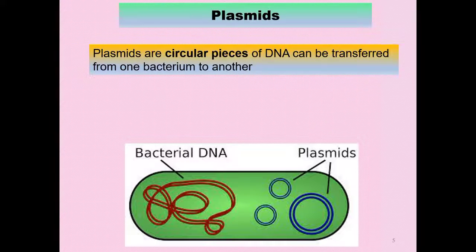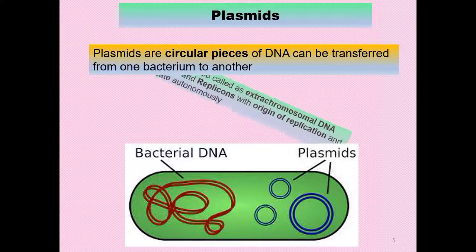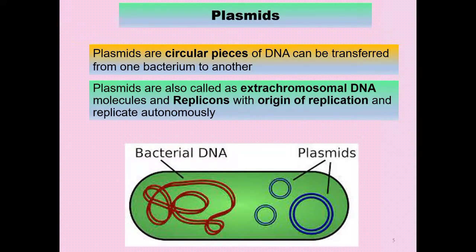Plasmids — what are the plasmids? As discussed earlier, plasmids are responsible for antibiotic resistance. These are circular pieces of DNA and can be transferred from one bacterium to another through conjugation and other recombinant methods. They are also called extrachromosomal DNA molecules. These plasmids have an origin of replication and can replicate automatically within the bacteria.